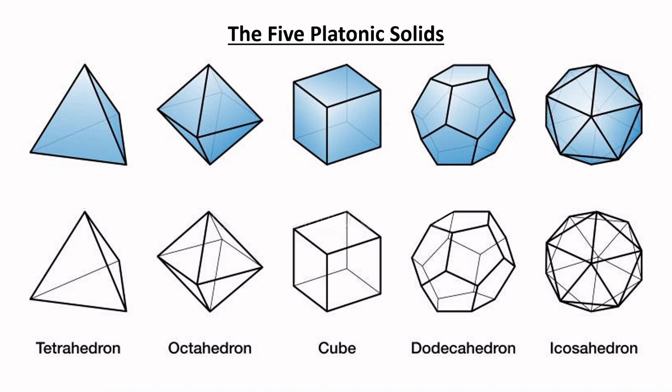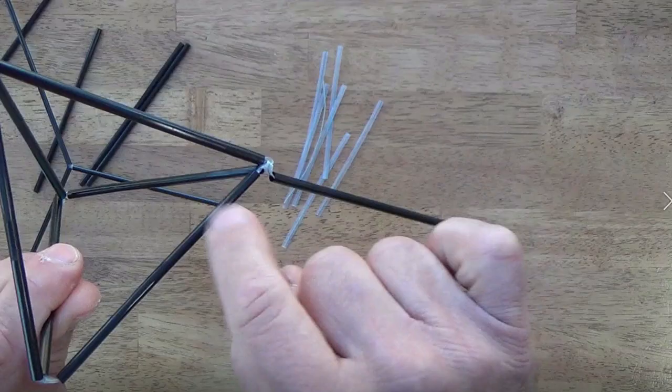Our first slide reviews the five different Platonic solids: tetrahedron, octahedron, cube, dodecahedron, icosahedron, which you may or may not be familiar with. The solids are on the top and frames are on the bottom, hollow frames. We'll be using each of those, some a lot more than others.